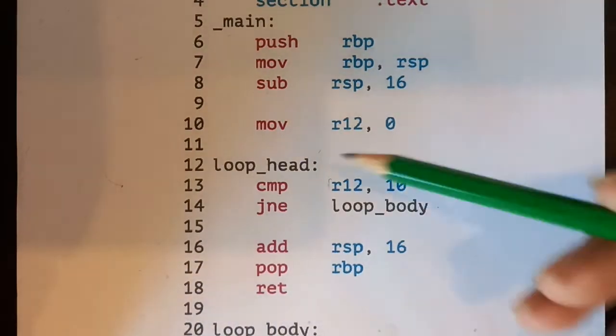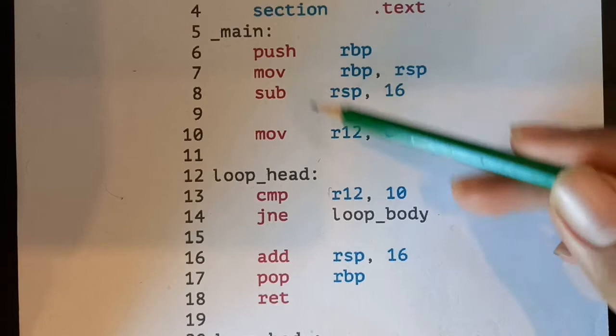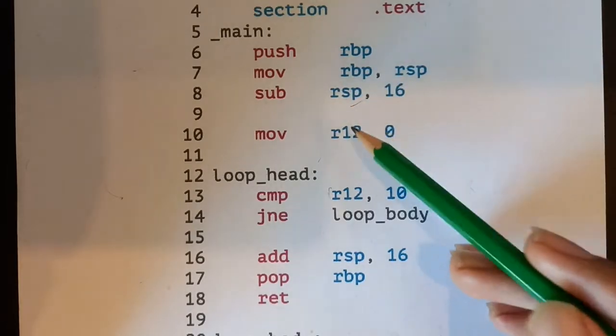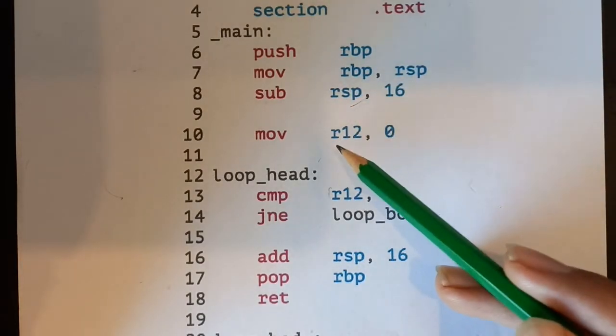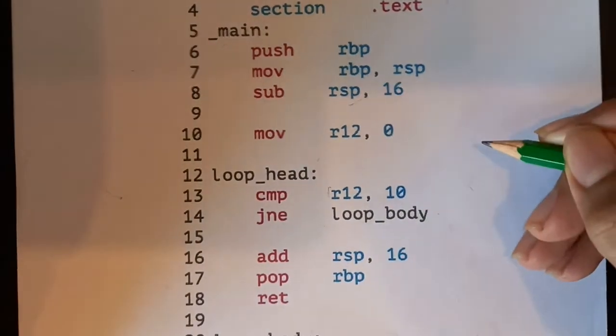This program is pretty simple. First, we start with our usual function body stuff, setting up the stack. Then we move zero into R12. So R12 is basically going to be the variable we store that we're looping over. So this will be like int i equals zero, right?